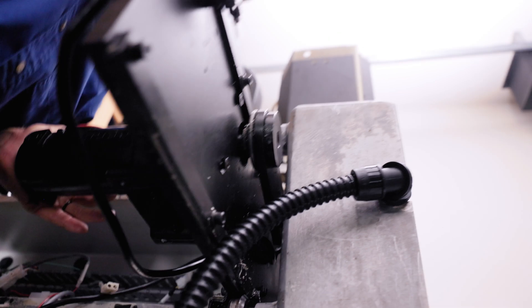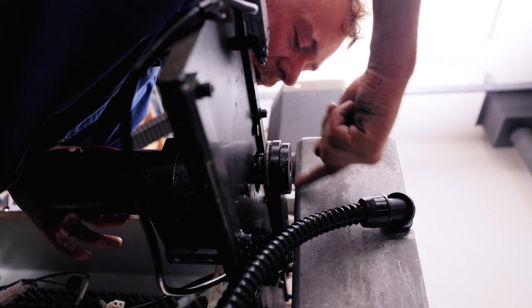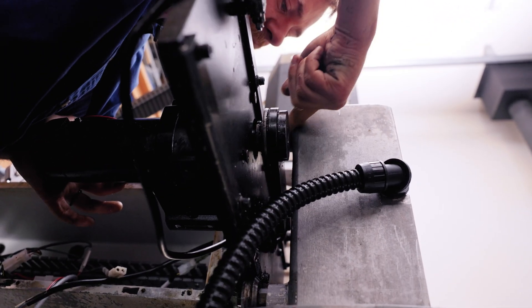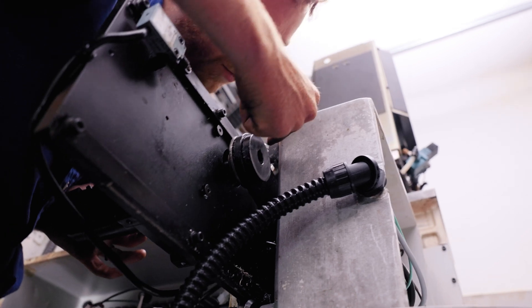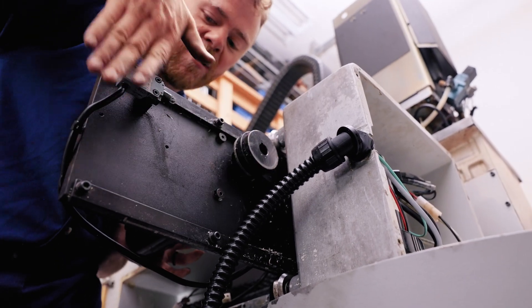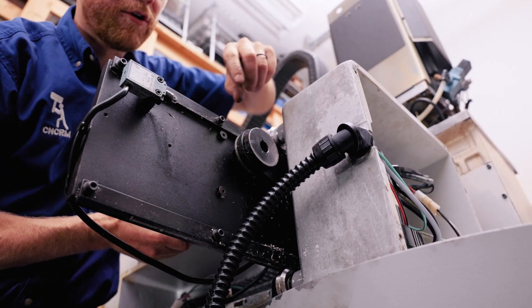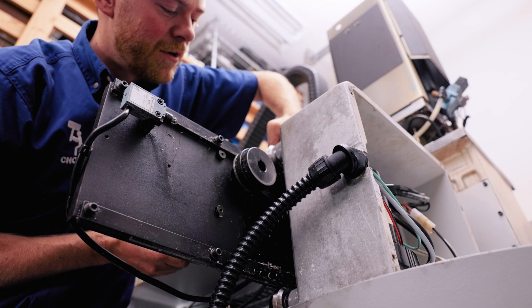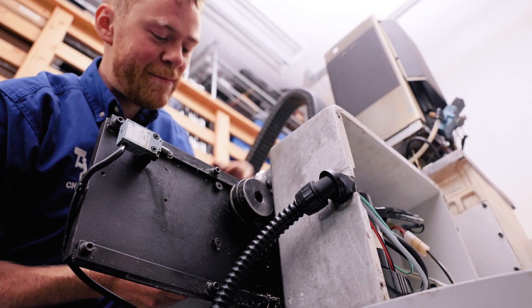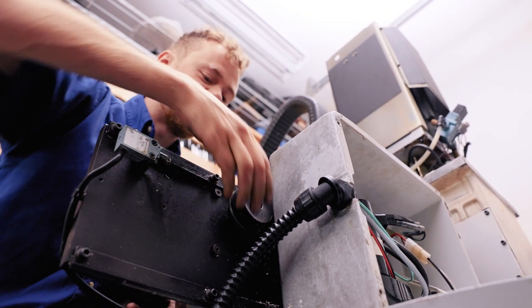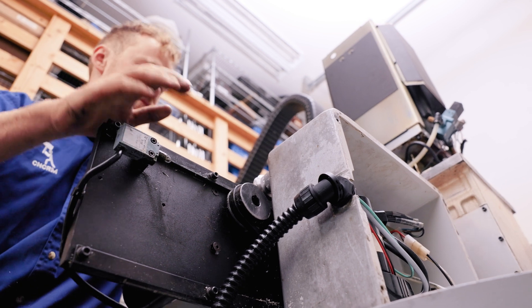That last screw, the tricky one, that's behind, there's one, two, three, four. That's the hard one to get because you have to have this all the way back and then get in there with a little stubby Allen wrench. And it was missing on my machine. If it's missing on your machine, tighten the other three, you'd probably be fine.